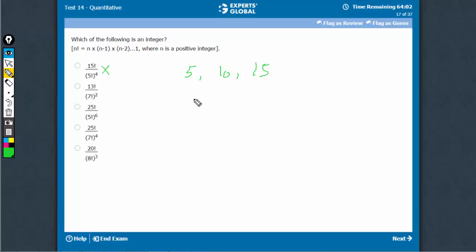13 factorial has only one 7 in it, the 7 itself. There's an extra 7 in the denominator, it's not going to be an integer.